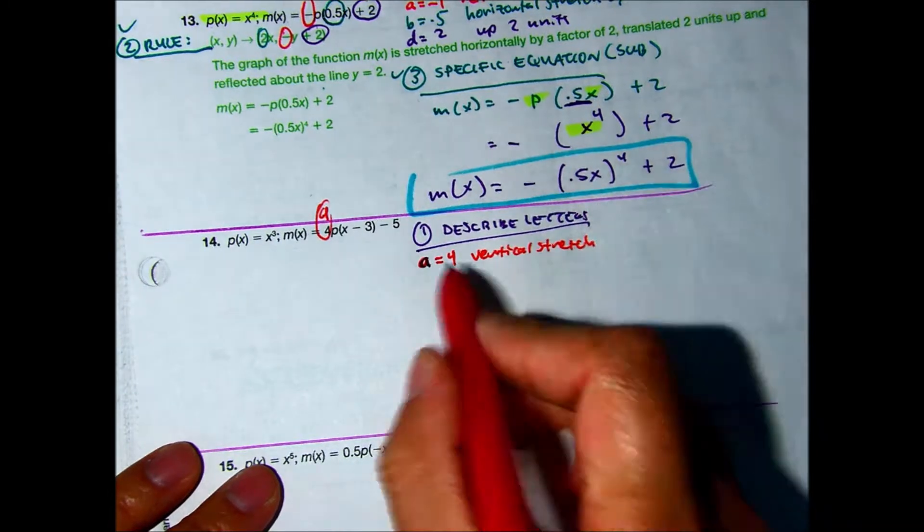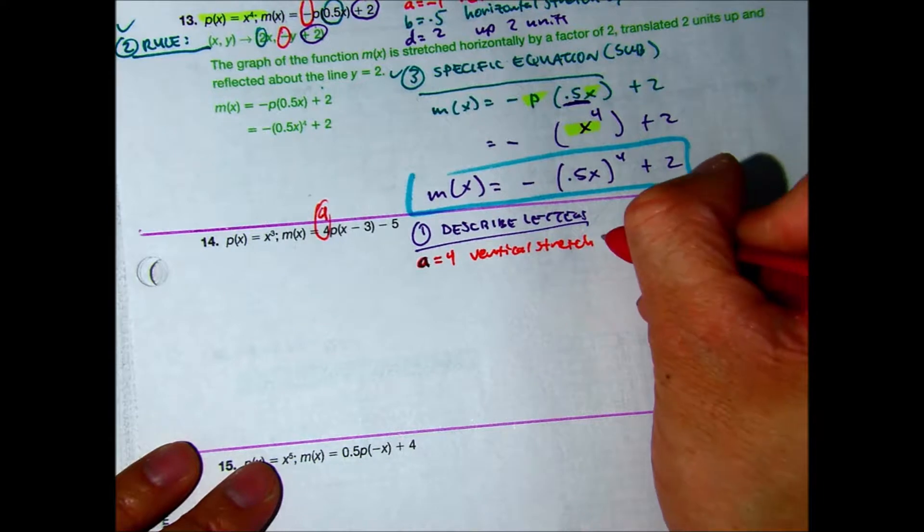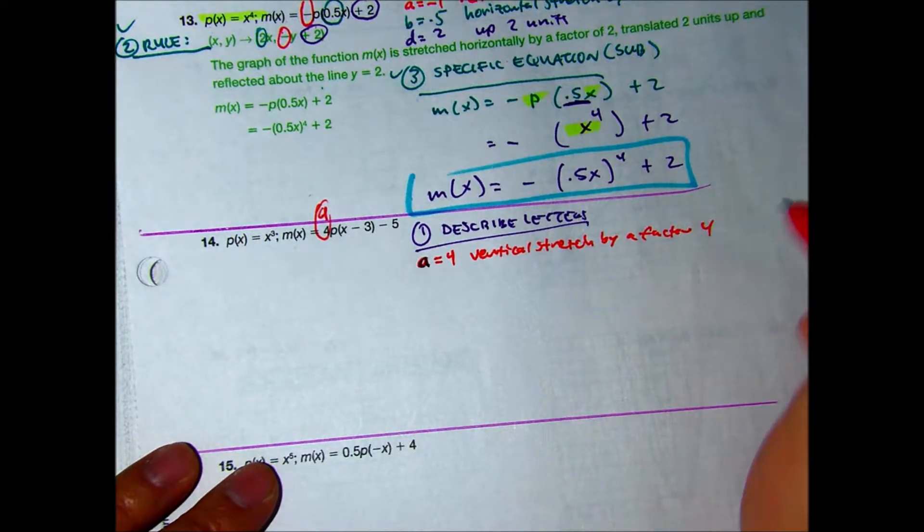The reason why it's a stretch is that the value is greater than one. By a factor of four, they call it. By a factor of four. Thank you Chris.